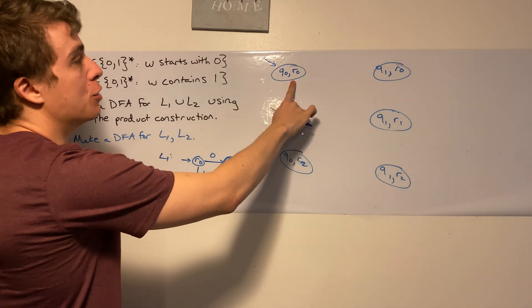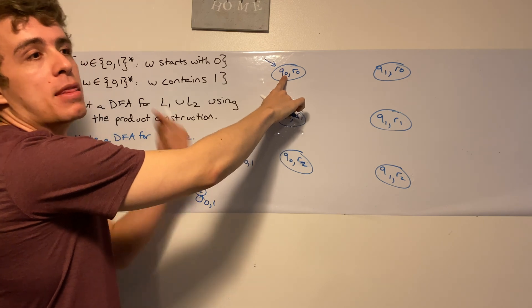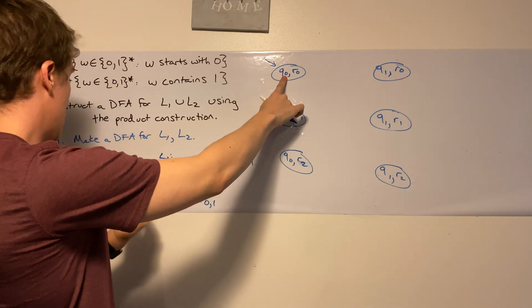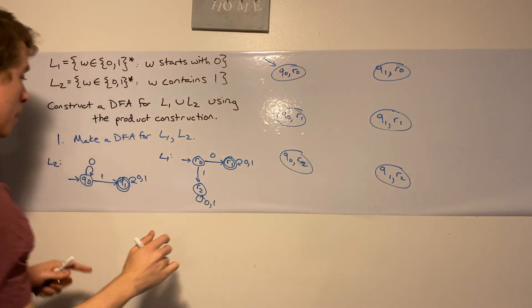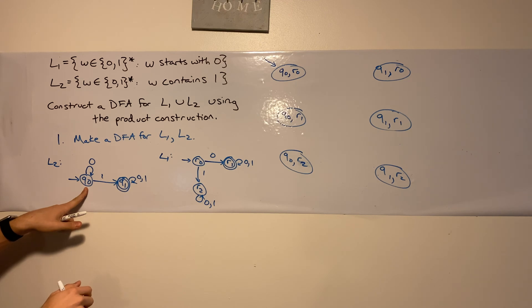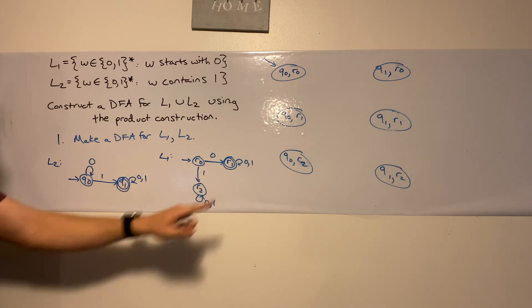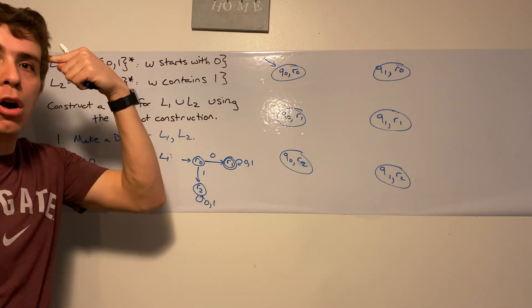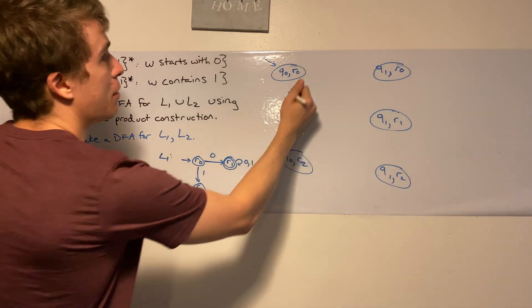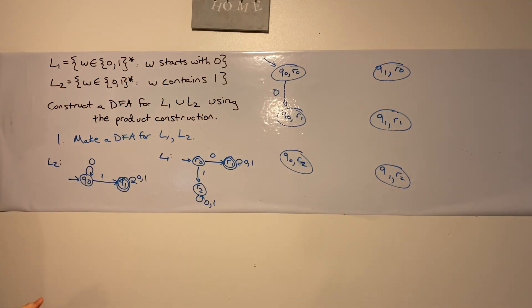So let's look at this state q0, r0. This corresponds to state q0 in the first DFA and r0 in the second DFA. q0, what does it do on 0? It goes to q0, because of the self-loop. And r0, what does it do? It goes to r1. So in my mind, I'm thinking q0, r1, which is this state right here. So I'm going to have a transition on 0 to that.